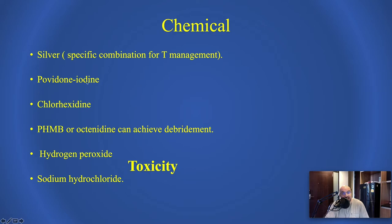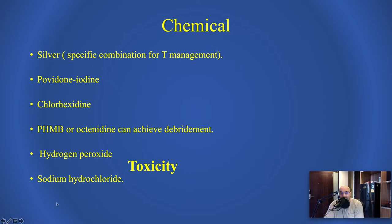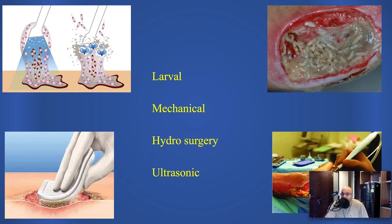The third option in tissue management is chemical debridement, using agents such as silver — not just any type, but specific components combined with silver in creams or gels. Other chemical agents include povidone-iodine, chlorhexidine, PHMB, hydrogen peroxide, and sodium hypochlorite — but don't forget the toxicity considerations when dealing with these. These categories fall within chemical tissue management and may also have some impact on infection.